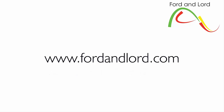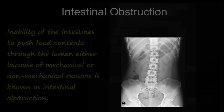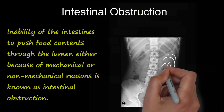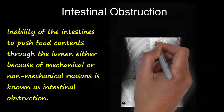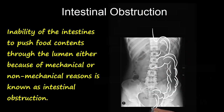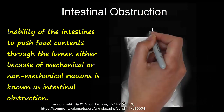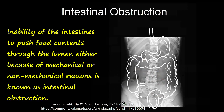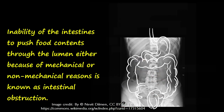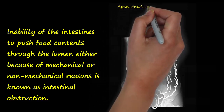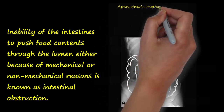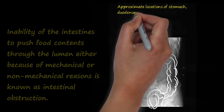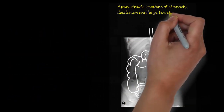Intestinal obstruction is the inability of the intestines to push food contents through the lumen, either because of mechanical or non-mechanical reasons. It is also known as bowel obstruction. A unique feature of intestinal obstruction is dilatation of the intestinal segments proximal to the site of obstruction and collapse of segments distal to the obstruction.